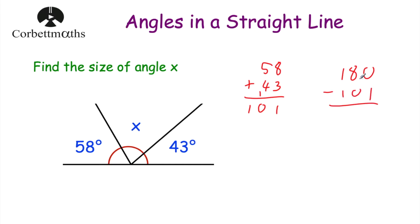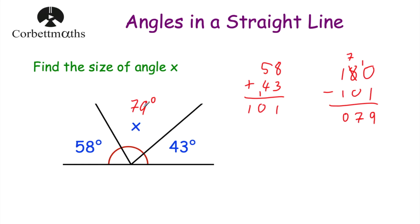So we'll do 180 degrees subtract 101 degrees. 0 take away 1 — we can't do this, so let's cross off the 8 and call that a 7, and this is 10. 10 take away 1 is equal to 9, 7 take away 0 is equal to 7, and 1 take away 1 is equal to 0. So x is 79 degrees. We could check our answer: 58 plus 79 plus 43 should equal 180 degrees.